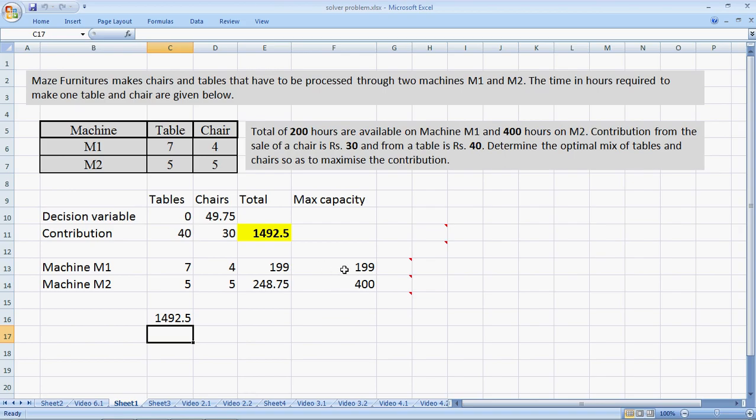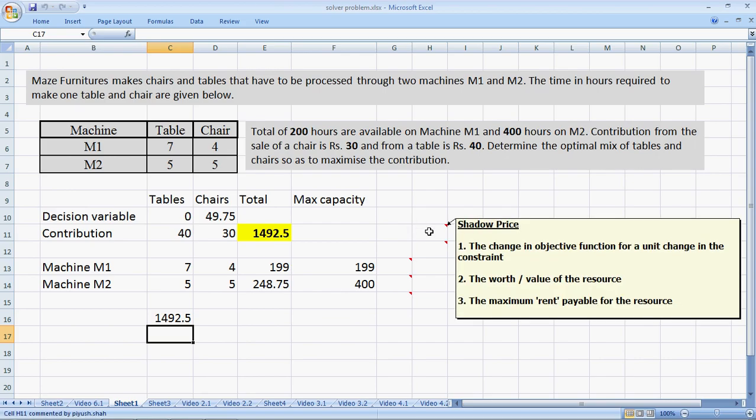So this number of 7.5 units is what we call the shadow price. The shadow price is the change in objective function for unit change of the constraint or unit change of the binding constraint. It's also called the worth of the resource. So an increase of one unit of resource is worth 7.5 rupees for me in terms of my contribution. And if an extra unit of this resource was available in the market, 7.5 rupees is the maximum I would pay to get this resource.